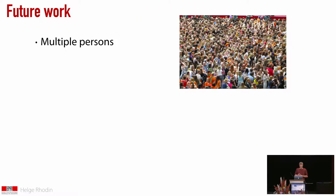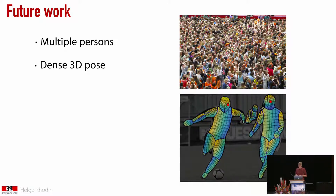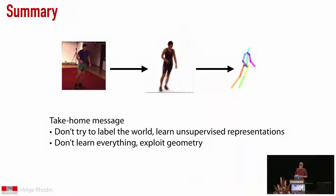There are some limitations and future work to mention. Currently we handle only a single person and only sparse keypoints; we would like to extend to dense pose as well, though that should only concern the last part since the representation is general. The take-home message is that instead of trying to label the whole world, we try to learn from unsupervised examples, and where possible, we exploit geometry to do that.